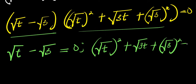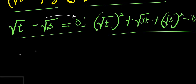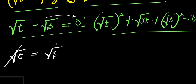To solve these two equations, we start with the first one. Moving the square root of three over, we get square root of t equals square root of three. The square roots cancel, giving t equals three. This is our first solution, t₁ equals three.